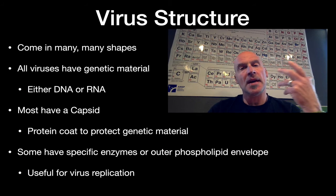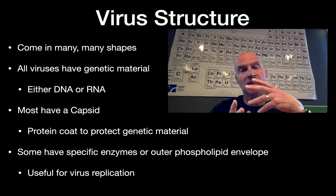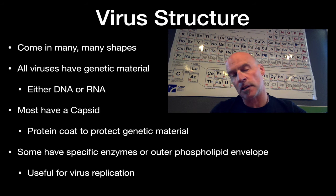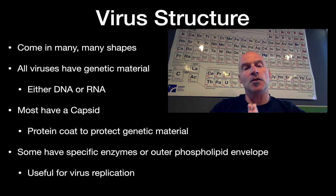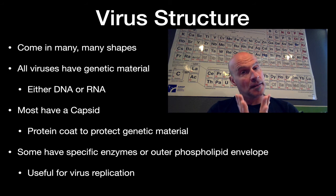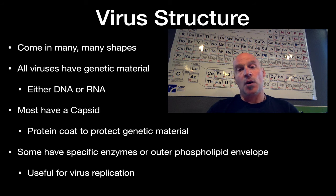Virus structure: viruses come in many, many shapes. All viruses have genetic material, and that genetic material is either going to be DNA or RNA. Most have a capsid, which is a protein coat that protects the genetic material inside. Some are also going to have specific enzymes that bond to specific parts of the cell, or they'll have a phospholipid envelope — all useful for virus replication. An interesting side note: one of the reasons you wash your hands is that the chemistry in soap bonds and breaks down fat. Specifically, a phospholipid — lipid meaning fat — so the soap actually breaks down the outer shell of the virus, destroying it. That's why you always wash your hands.